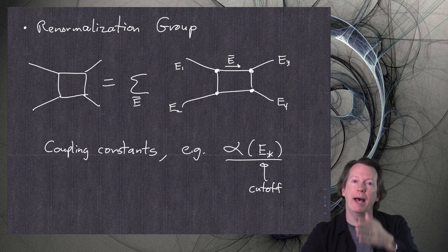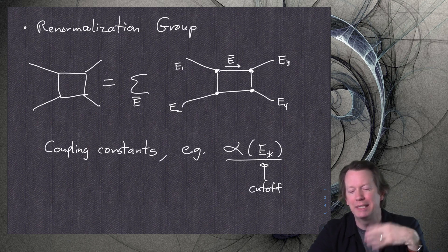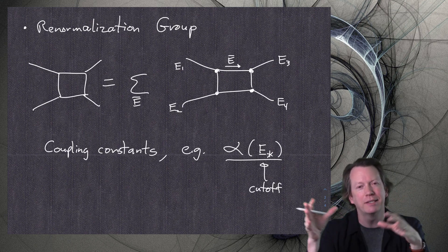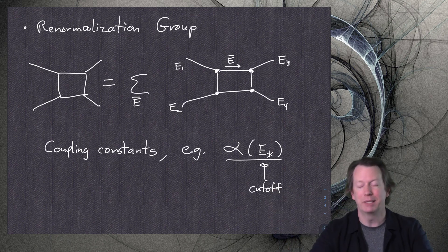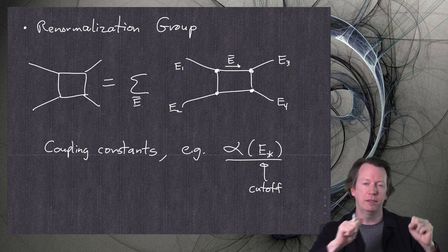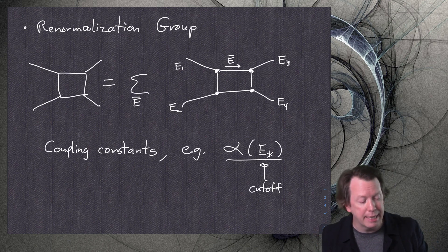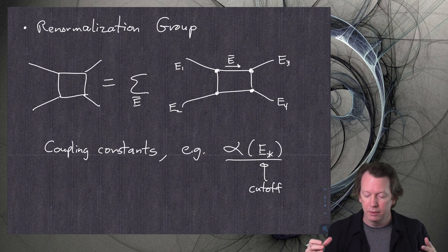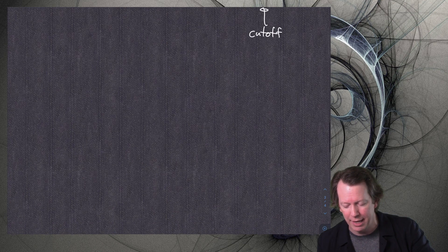The renormalization group is simply how the different coupling constants change as you change the cutoff. For those who know what a group is in mathematics — a set of things you can add or multiply together with an inverse and various restrictions — the renormalization group is not really a group at all, but the name was given to it and it stuck. The renormalization group is how you change your coupling constants as you change your cutoff so that your infrared low-energy processes get the same answer. The questions were basically: how in the world can this work? That's how it works.